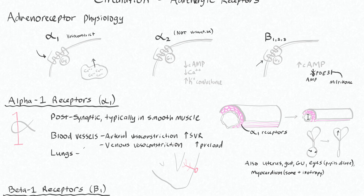Technically, you also have alpha-1 receptors in your lungs, and you could get bronchoconstriction from this, but this is not really something that you see clinically.